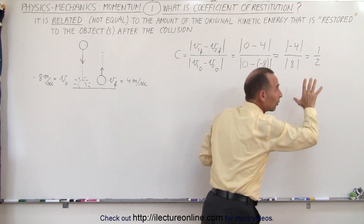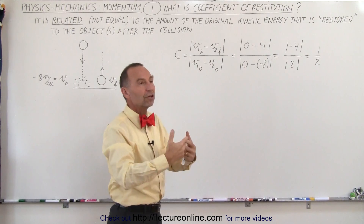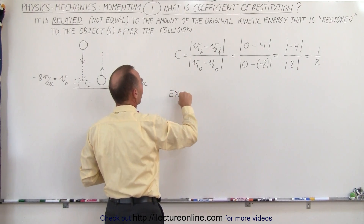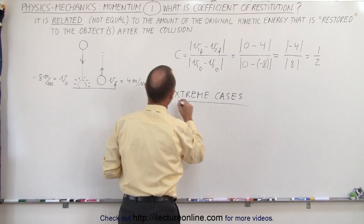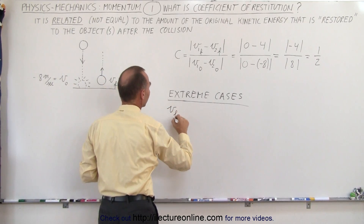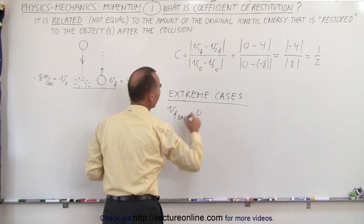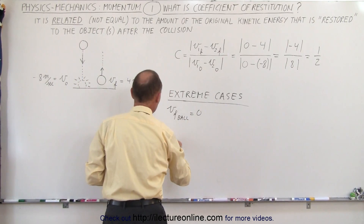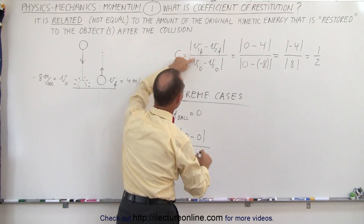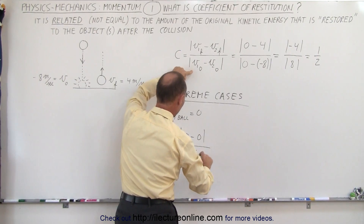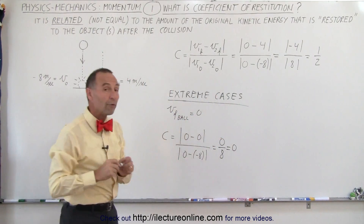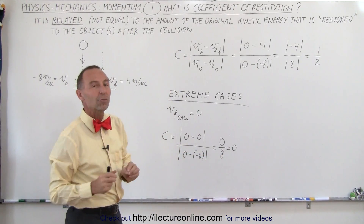A value of 0.5 does not mean that half the energy is restored — we'll look at that later. Now let's consider the extreme cases. If the ball falls to the ground and stays there, the final velocity of the ball is 0. The coefficient of restitution would then be 0 minus 0, divided by 0 minus (−8), giving us 0 divided by 8, which equals 0. A coefficient of restitution of 0 means none of the energy was restored — all of it was lost.